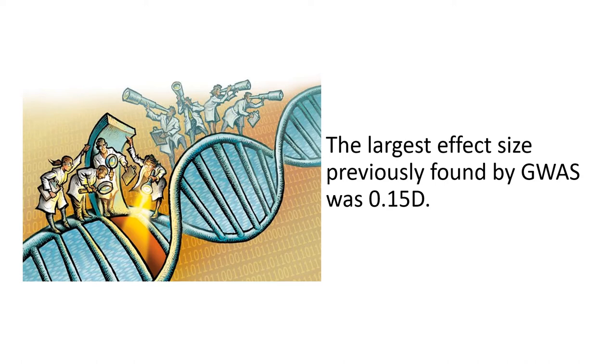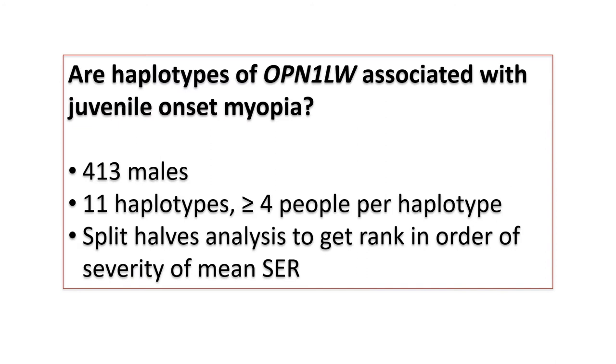This is the largest effect size so far identified for myopia. The largest effect size before this was found using genome-wide association studies and the largest effect size was 0.15 diopters compared to our 2.12 diopters for the cone opsin genes.